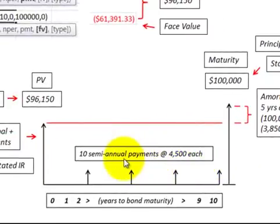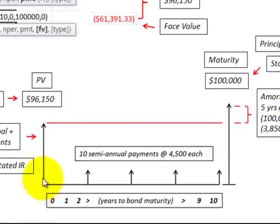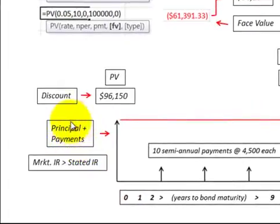What we have to do here is discount these payments back to their present value, and also discount the face value or principal amount back to its present value at the issue or purchase date. So we need to determine the present value of both the principal and the payments.